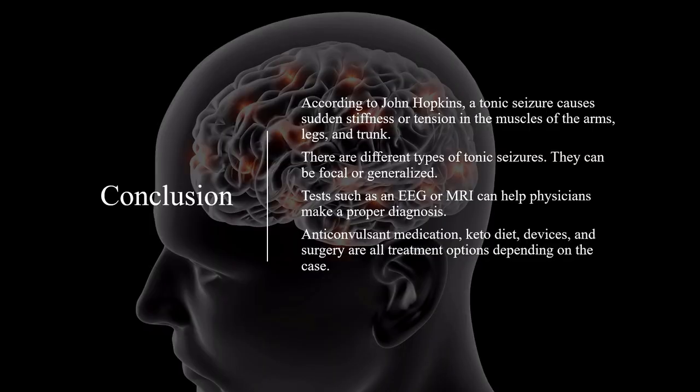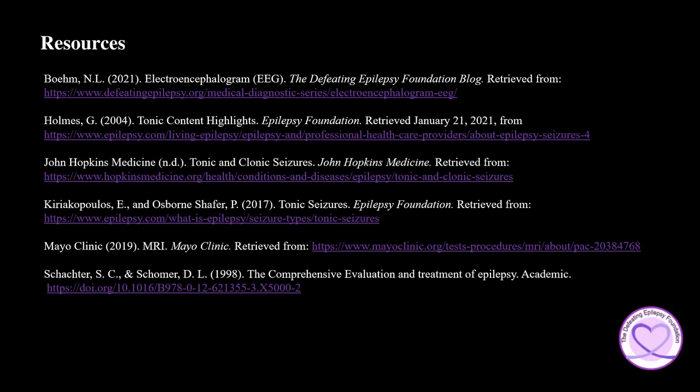In conclusion, according to Johns Hopkins, a tonic seizure causes sudden stiffness or tension in the muscles of the arms, legs, and trunk. There are different types of tonic seizures — they can be focal or generalized. Tests such as an EEG or MRI can help physicians make a proper diagnosis. Anticonvulsant medication, keto diet, devices, and surgery are all treatment options depending on the case. To learn more about tonic seizures, please check out the resources used in the presentation today.